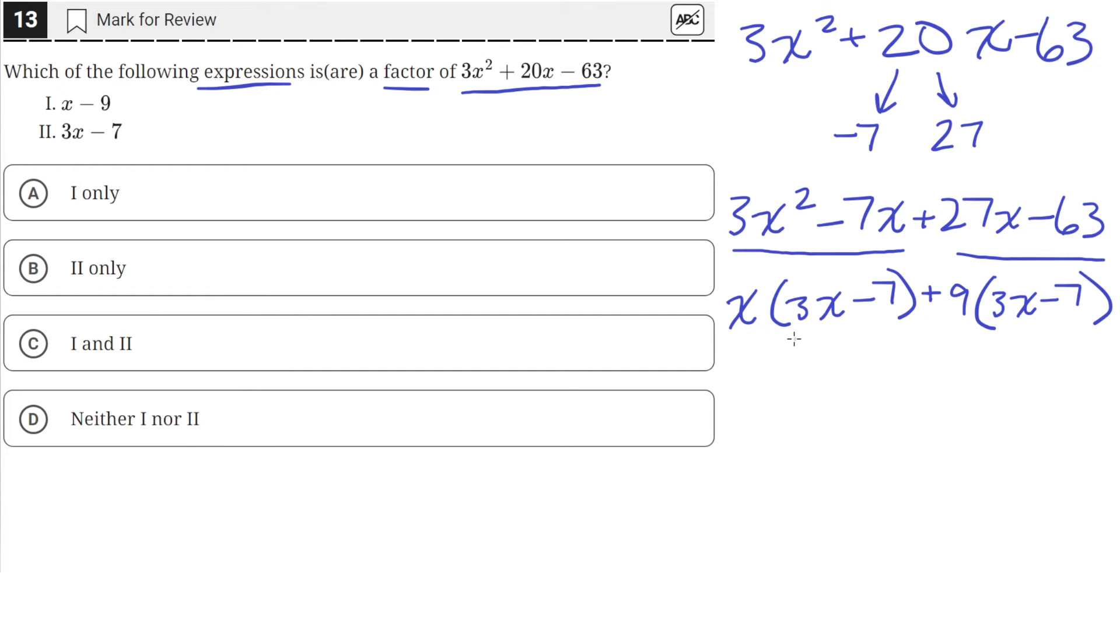And now we can see that these two quantities right here, the 3x minus 7, are common to both. So we can factor that out. So 3x minus 7, that will be multiplied by these coefficients, x plus 9, for these factors.